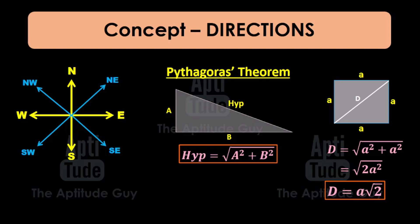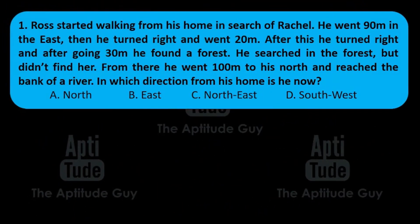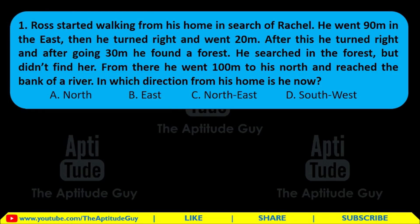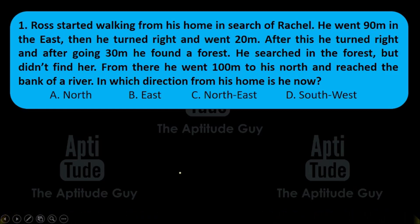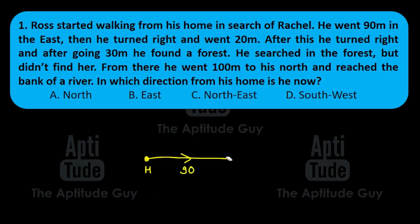This was the concept of directions. Let's start with question number 1. As usual, pause the video, try to solve the question, and then come back. In directions, the questions will be very long and the solutions will be very small — don't panic by looking at the size of the question. Ross started walking from his home in search of Rachel. He went 90 meters east. I want you to focus on three things: label the starting point, the direction, and the distance traveled. This has three pieces of information, so always write everything down.